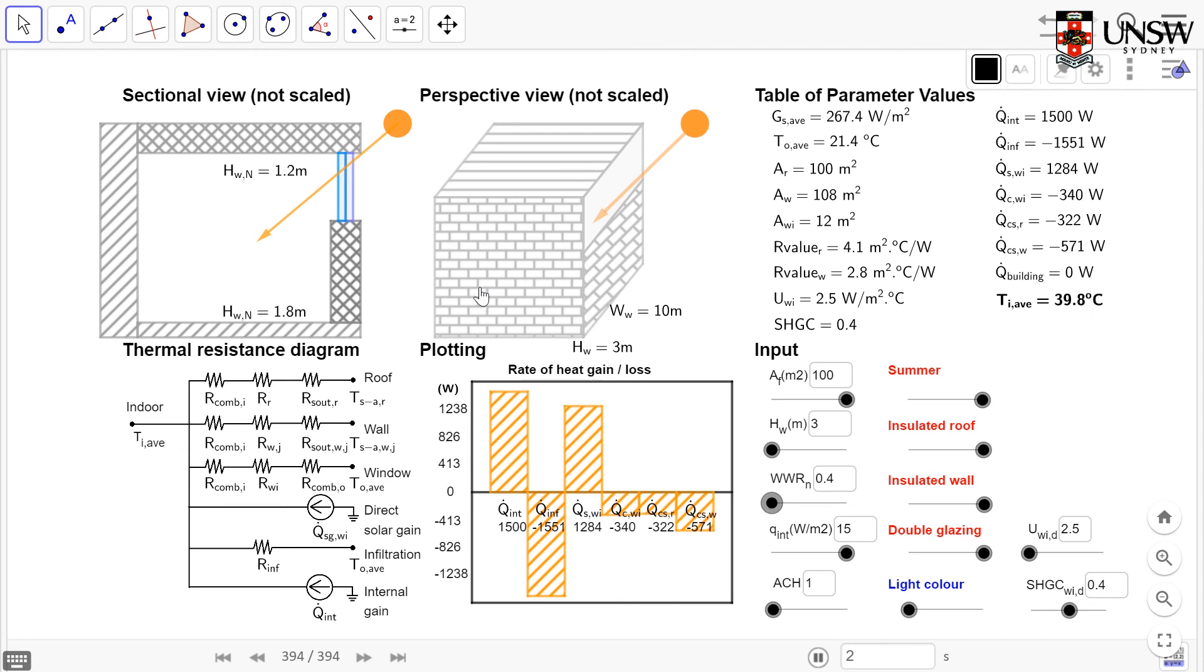Alright, excellent. So we can see that decreasing our window to wall ratio has reduced those solar gains, and has reduced our average indoor temperature.